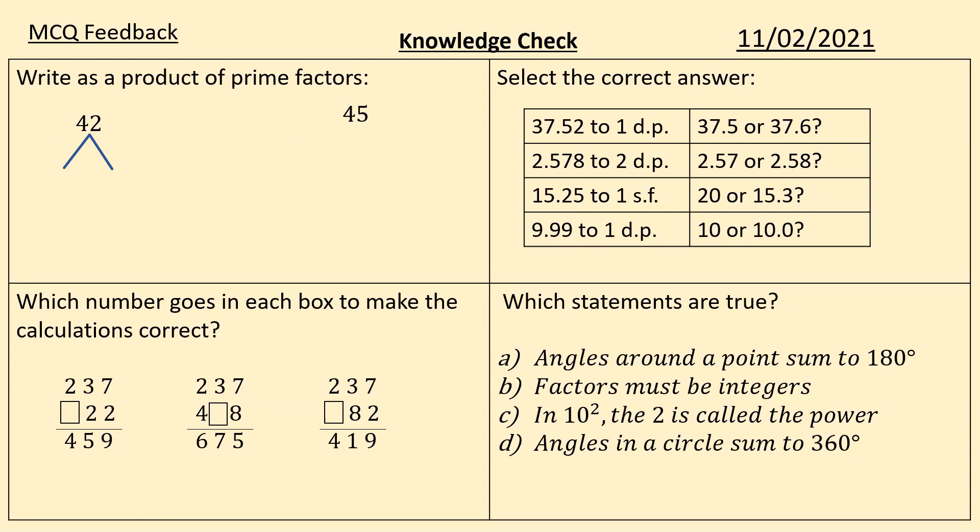All right, let's look at the answers then. So prime factors, we should hopefully be getting used now to breaking it down into factor trees and starting with the two times tables and working your way up. So 42, firstly, you'd break down into two and 21. And the 21 breaks down into three and seven, which are both prime. So two multiplied by three, multiplied by seven. 45 can't be divided by two. So we go instead into the threes. It can divide by three. It's three and 15. The 15 then breaks down into three and five. So we've got three squared multiplied by five.